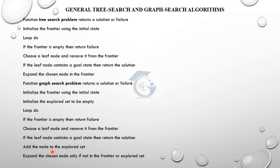The tree search returns a solution or failure. If there is a problem, it returns a solution or failure. Initialize the frontier using the initial state. Look at the loop: if the frontier is empty, then return failure. The frontier will expand the state. Choose a leaf node and remove it from the frontier. If the leaf node contains a goal state, then it returns the solution. Otherwise, we expand the node and add it to the frontier.